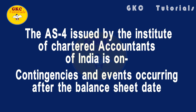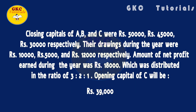AS4 issued by the Institute of Chartered Accountants of India is on contingencies and events occurring after the balance sheet date. Closing capitals of A, B and C were rupees 50,000, rupees 45,000, and rupees 30,000 respectively. Their drawings during the year were rupees 10,000, rupees 5,000, and rupees 12,000 respectively. Net profit of rupees 80,000 was distributed in the ratio of 3:2:1. The opening capital of C will be rupees 39,000.